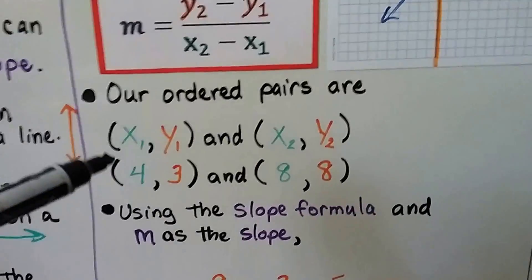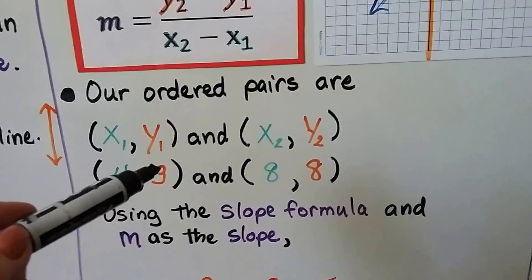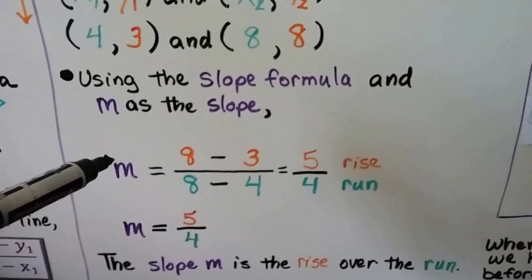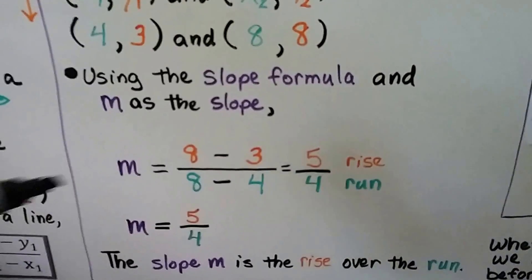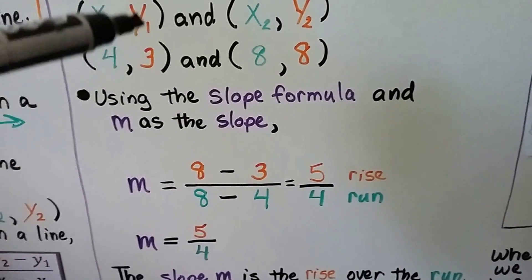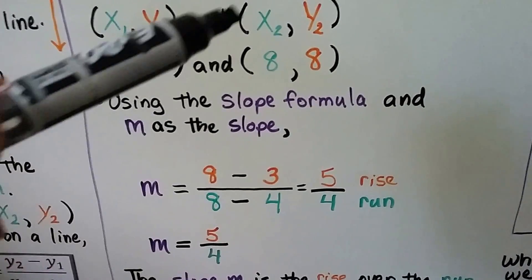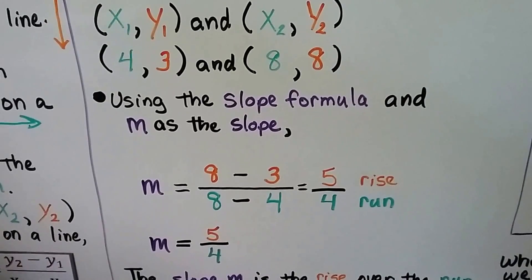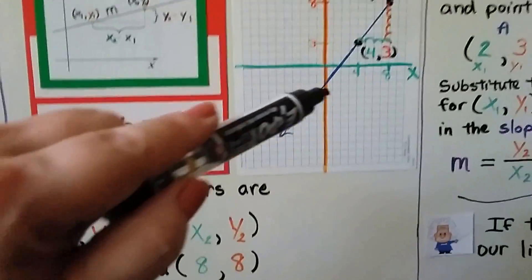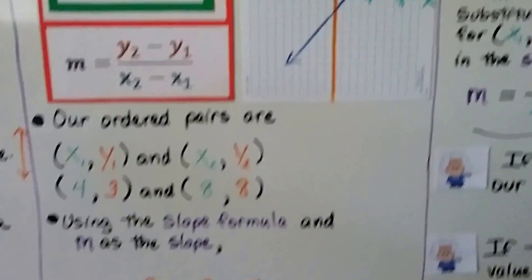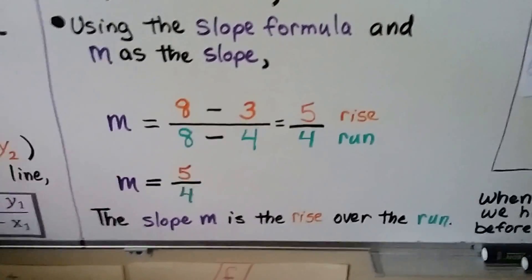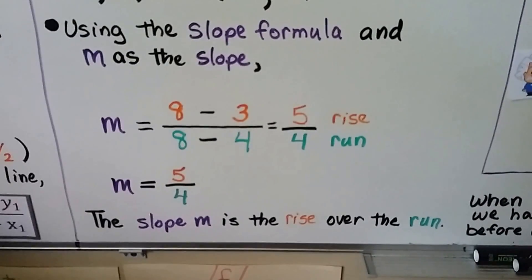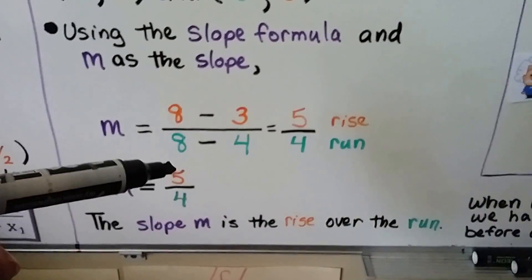Our ordered pairs are a 4 for x sub 1 and a 3 for y sub 1, an 8 for x sub 2, and an 8 for y sub 2. Using the slope formula, and m as the slope. Whenever you see m, it's going to represent the slope. We have our y sub 2 take away our y sub 1, so we have 8 minus 3. Then we have our x sub 2 as 8, take away x sub 1 as a 4. So we've got a 5 for our rise and a 4 for our run. Just like we counted when we counted the squares, we had a 5 and a 4. So it's the rise over the run. Our slope is 5 fourths. The slope m is the rise over the run.